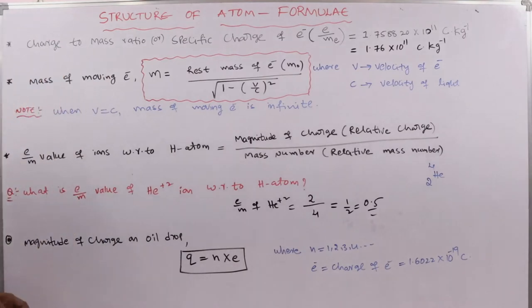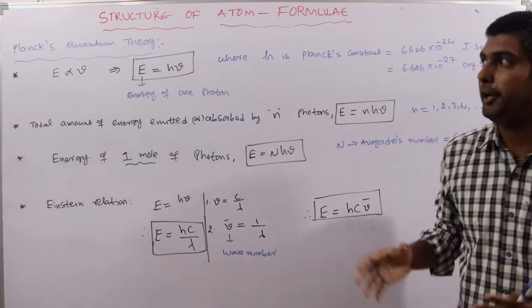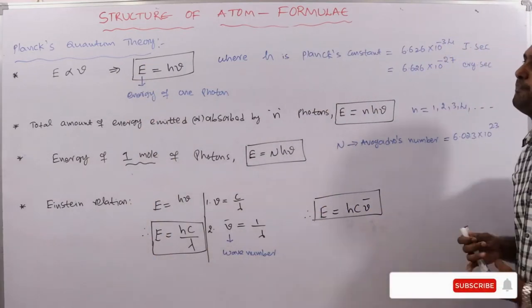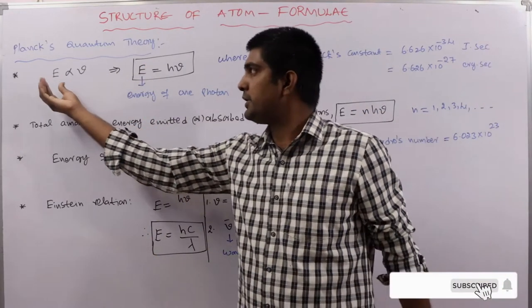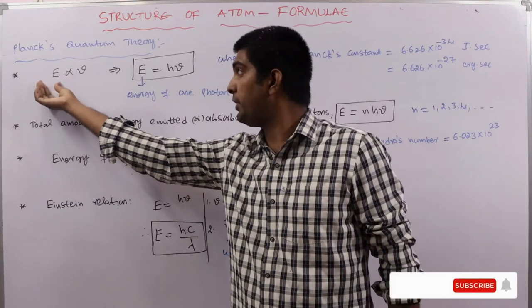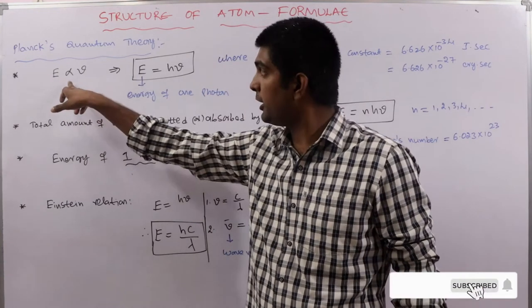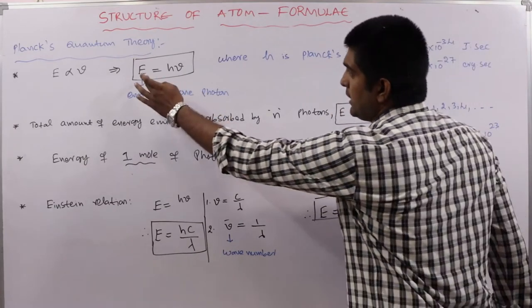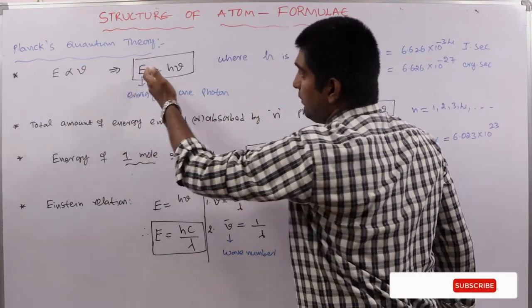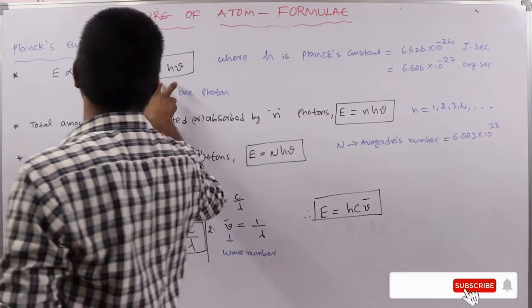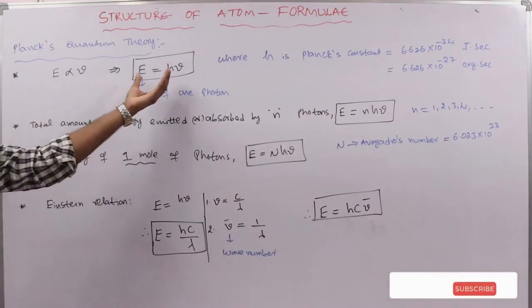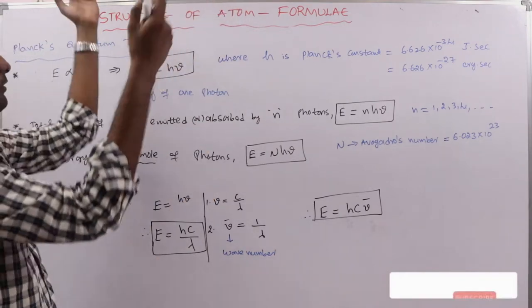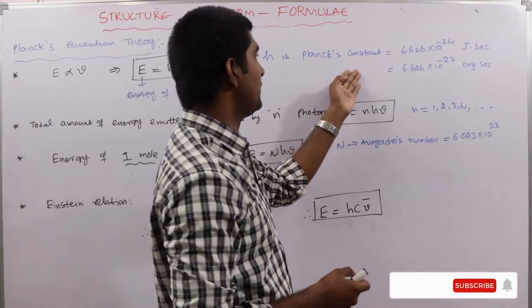Next, Planck's quantum theory: the energy of a photon emitted or absorbed is directly proportional to its frequency. Removing the proportionality gives E = hν, which is one of the most important relations in science.